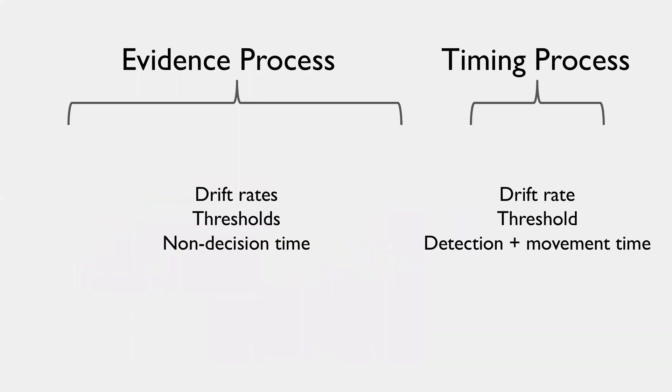When we set things up in this way, we have our parameters of the evidence process that we're familiar with that we have good evidence for, such as the drift rates, thresholds and non-decision time.